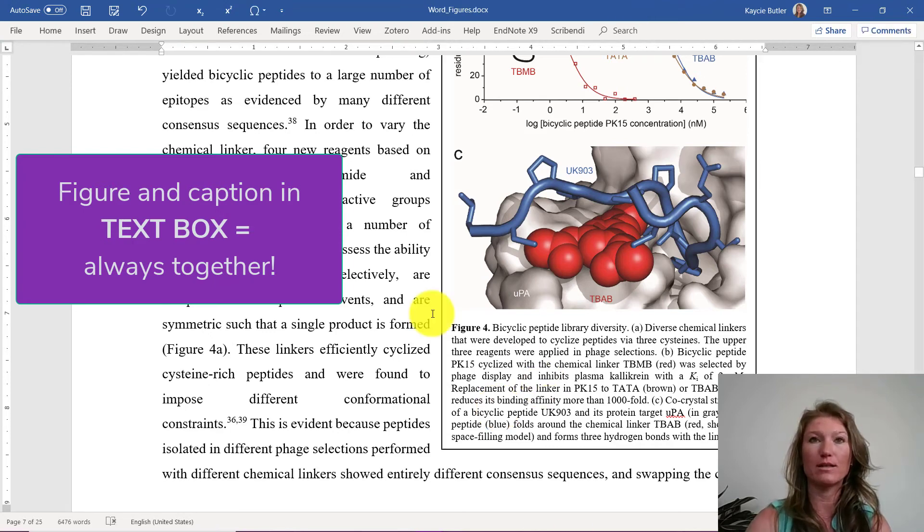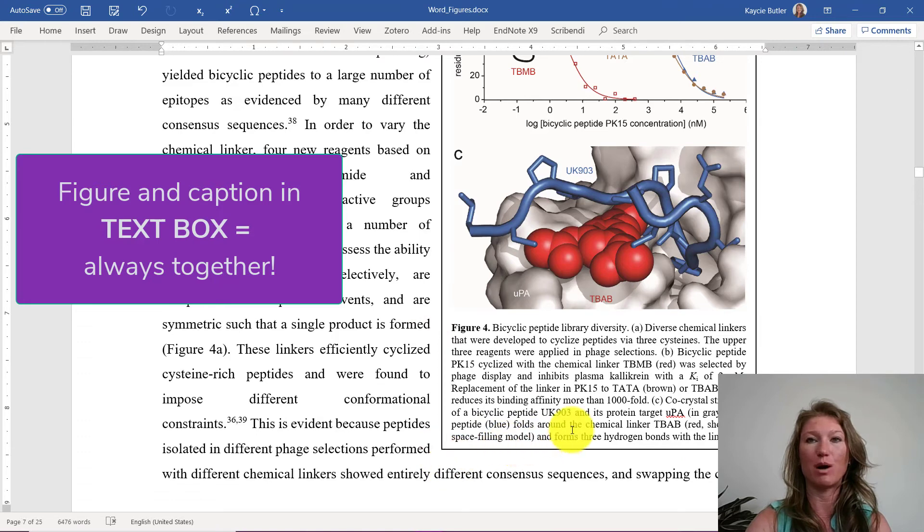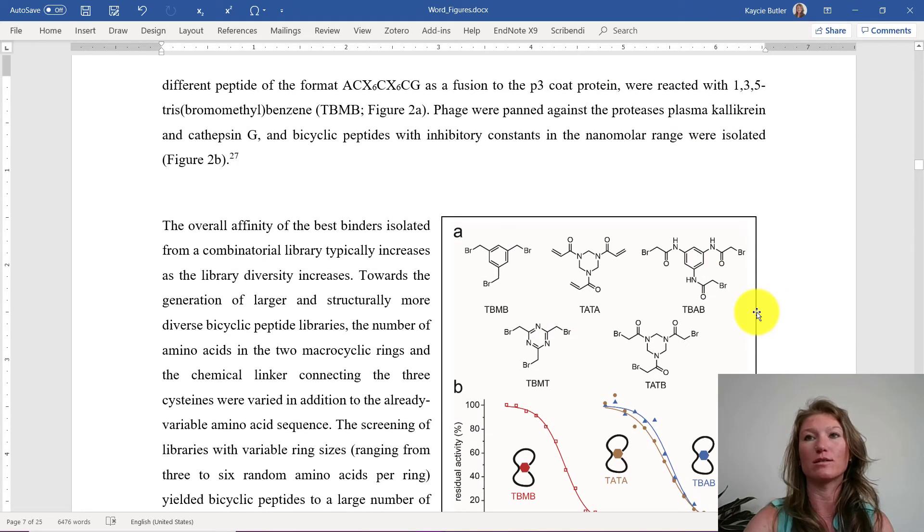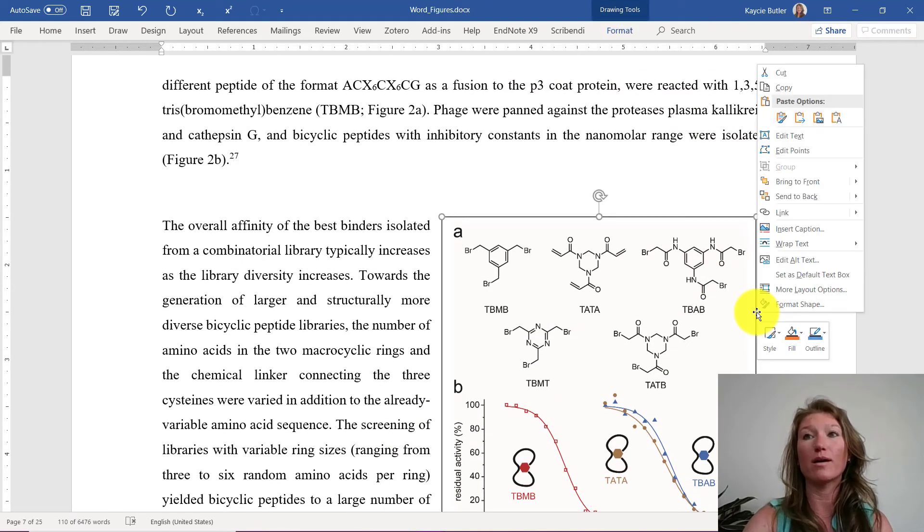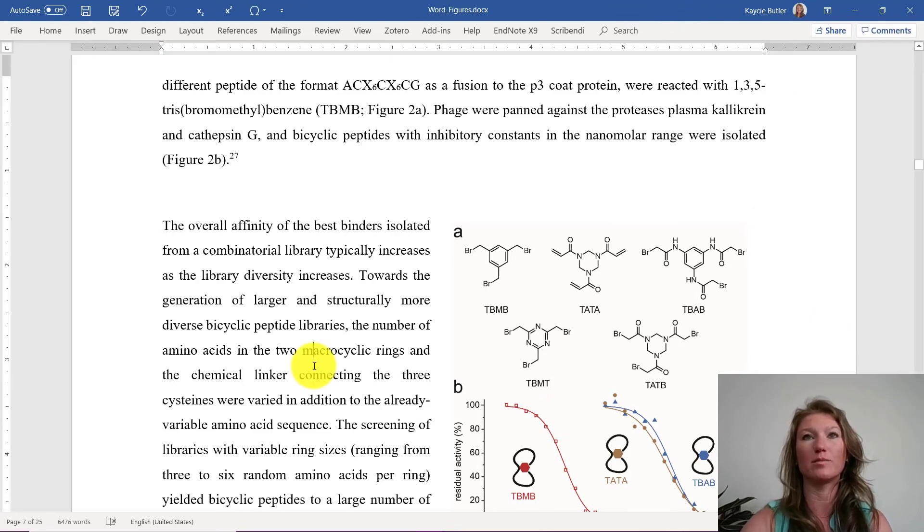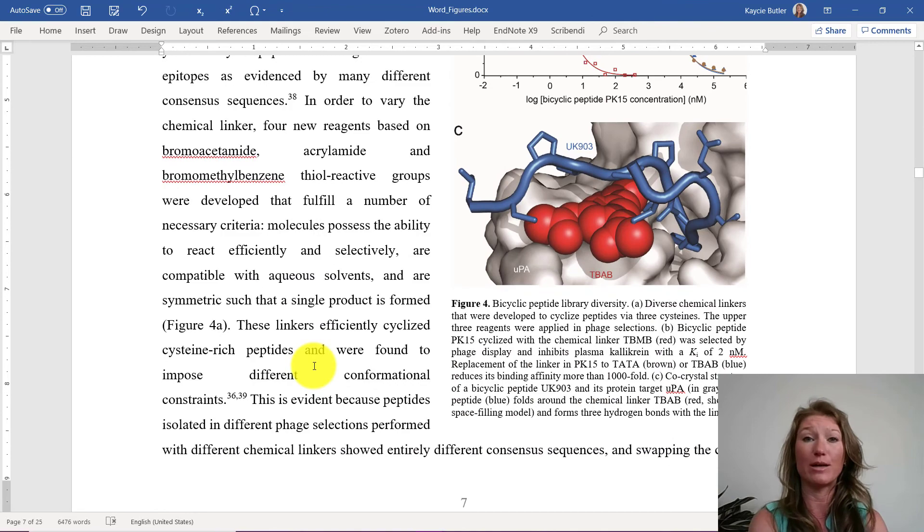A lot of times for grants, people like to have this box around it that's delineating this figure from the text. But if you don't want the box, that's also really simple. You can just right click on the box, go to outline and do no outline. And then your box disappears. You can't even tell it's there.